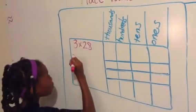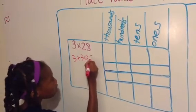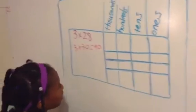28 rounds to 30, so we're going to do 3 times 30, which equals 90, so our answer should be close to 90.